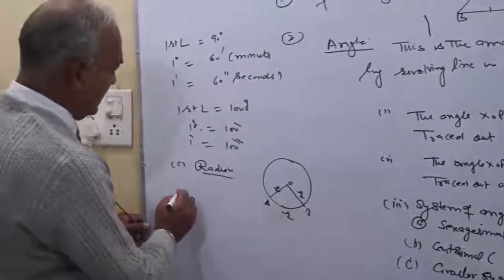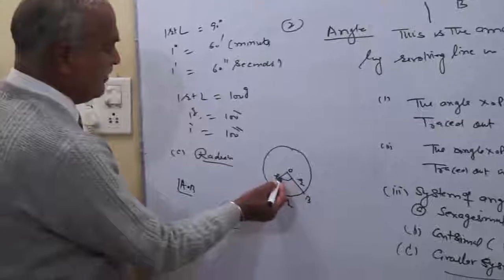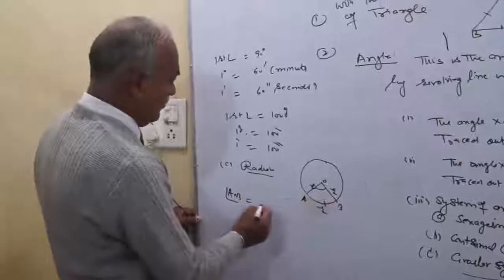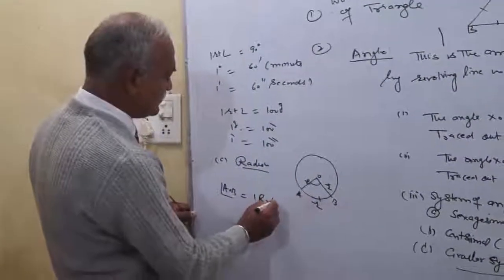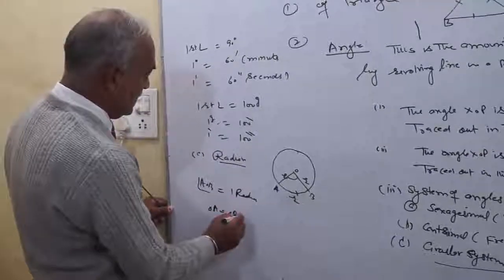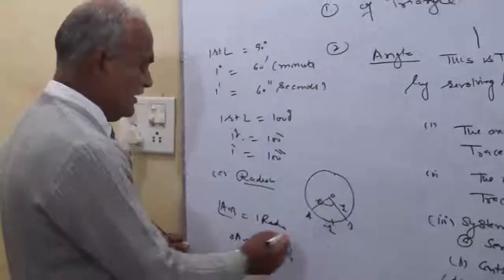Angle AOB is the angle subtended at the center of the circle by an arc whose length equals the radius. So angle AOB equals 1 radian. OA equals OB equals arc AB. This is 1 radian.